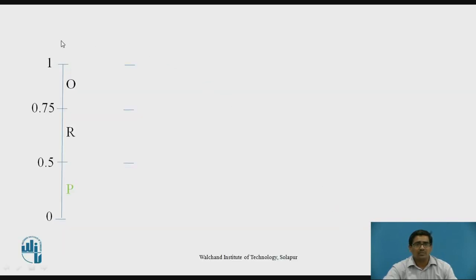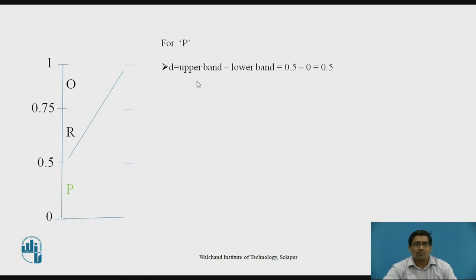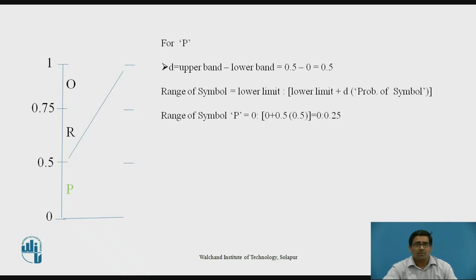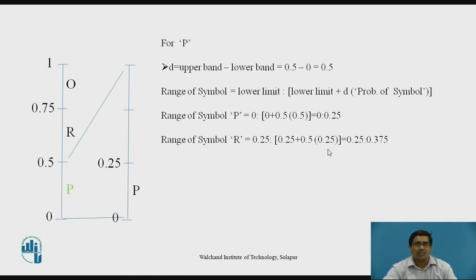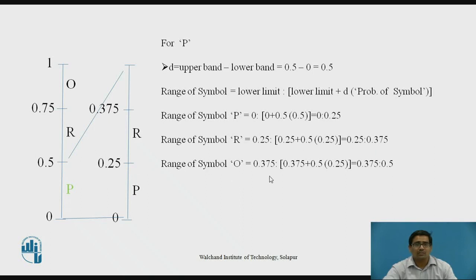Now we want to show the diagrammatic representation of the P subdivision. This is the overall subdivision of P. The range for P is 0 to 0.25. The range for R is 0.25 to 0.375. And the range for O is 0.375 to 0.5.